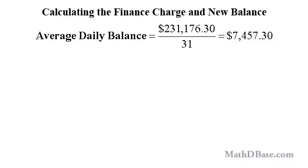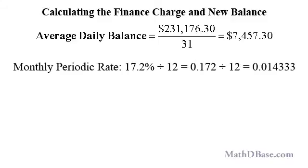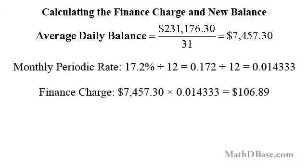Now divide the total from the sum of daily balances column by 31, the number of days in the billing cycle, to find the average daily balance, which is $231,176.30 divided by 31, or $7,457.30. The monthly periodic rate is 17.2% divided by 12, or 0.172 divided by 12, which is 0.014333. The finance charge is the product of the average daily balance and the monthly periodic rate: $7,457.30 times 0.014333.